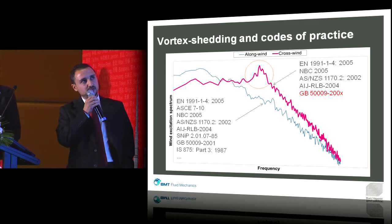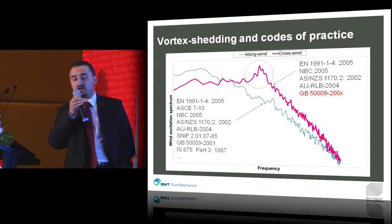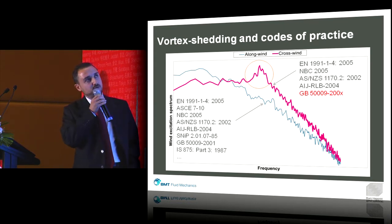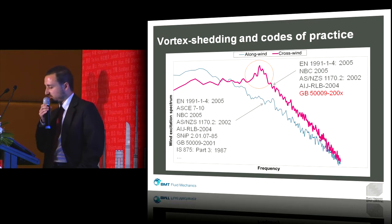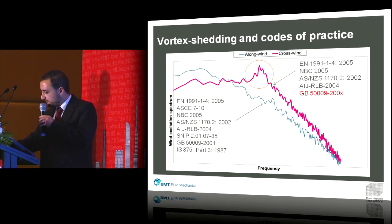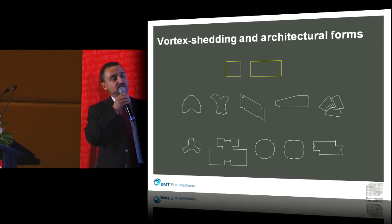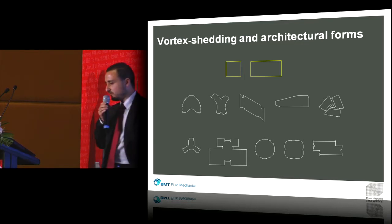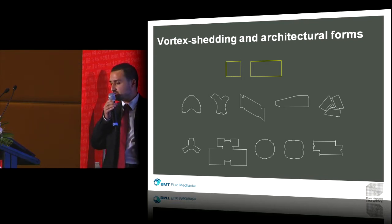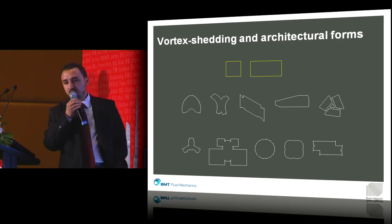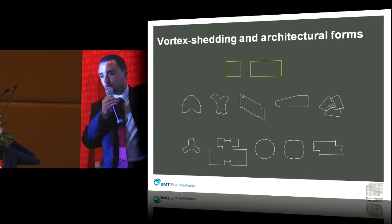Unfortunately, there's only a handful of wind codes which can actually provide designers with analytical methods capable of helping them make predictions about the structural response to this type of excitation. And although in those cases where codes do address vortex shedding, those models seem to be primarily based on very simple shapes — square, rectangular, prismatic buildings — which is currently not what we are designing.